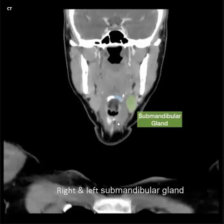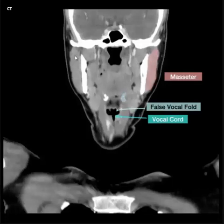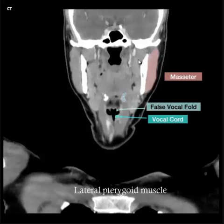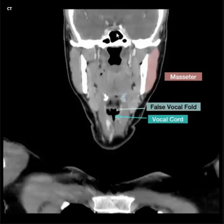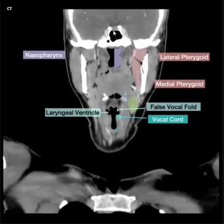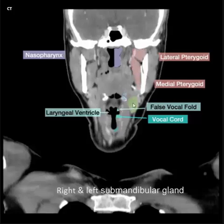Right and left submandibular gland. Right and left masseter muscle, right and left buccal space, lateral and medial pterygoid muscle. Sphenoid sinus, nasopharynx.